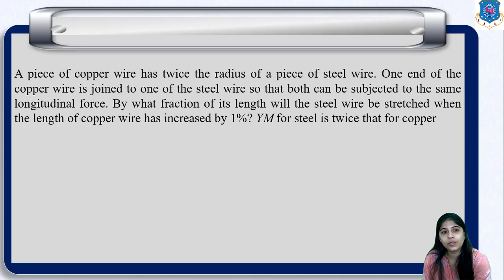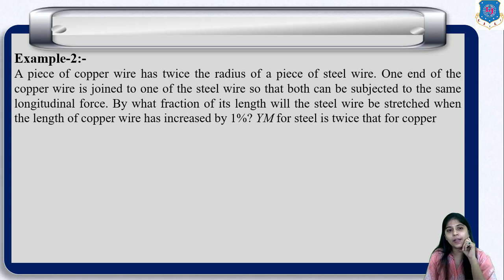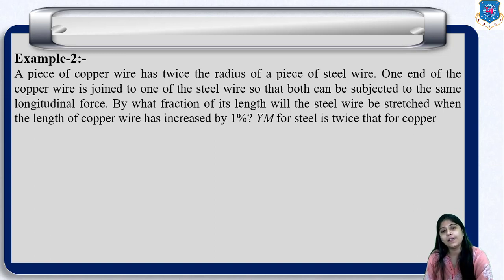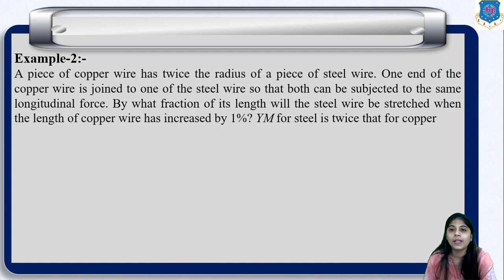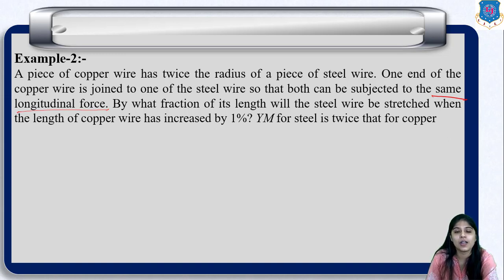Now let us go to example 2. A piece of copper wire has twice the radius of a piece of steel wire. One end of the copper wire is joined to one end of the steel wire so that both can be subjected to the same longitudinal force. By what fraction of its length will the steel wire be stretched when the length of the copper wire has increased by 1%? Young's modulus for steel is twice that for copper.